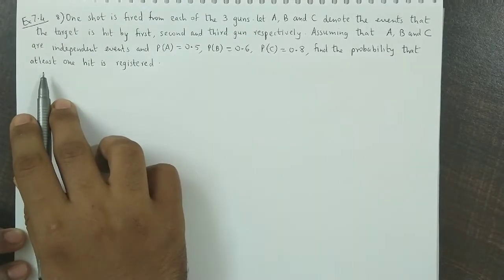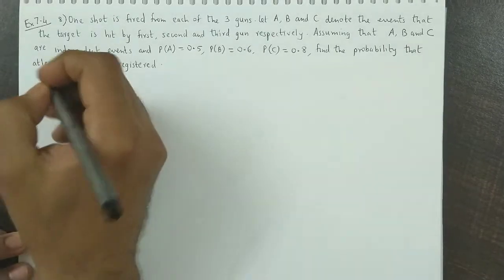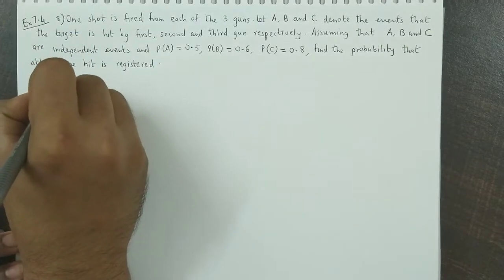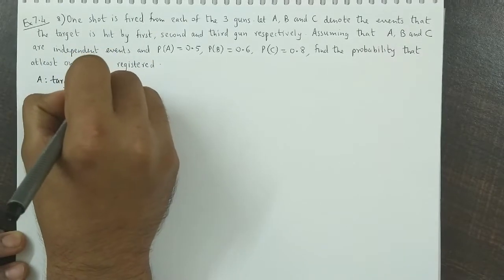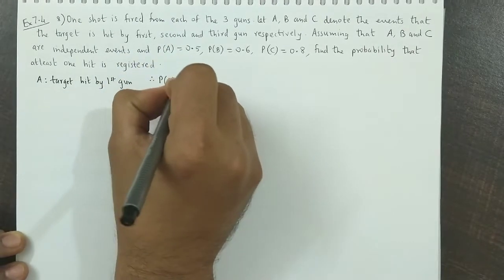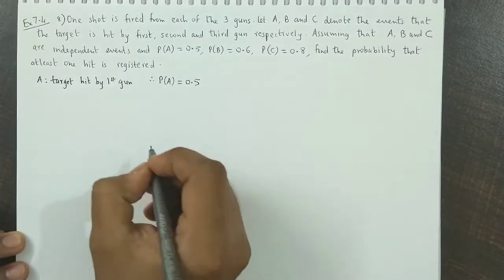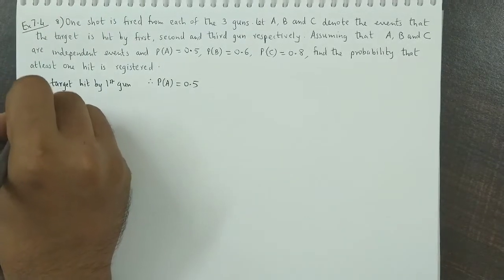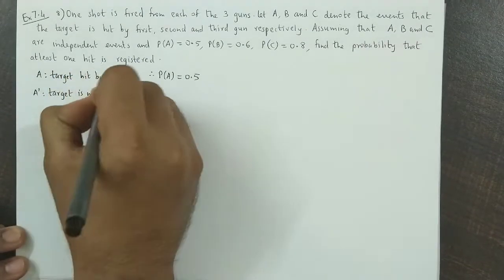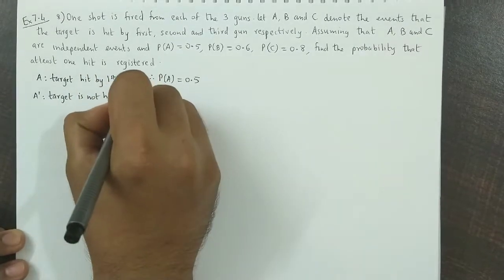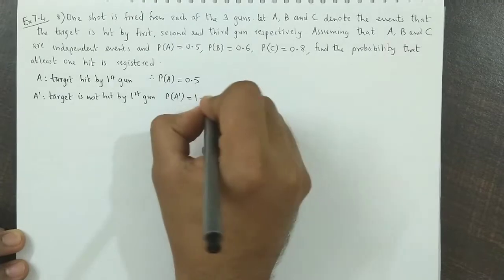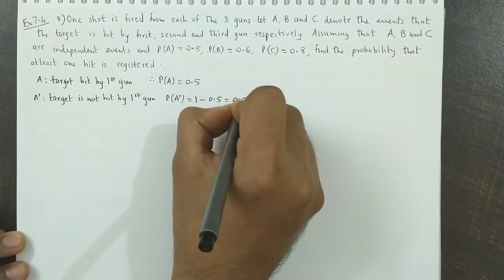Here event A is that the target is hit by the first gun. So the probability of A is 0.5. A complement means the target is not hit by the first gun. The probability of A complement will be 1 minus P(A), which equals 1 minus 0.5, so that will be 0.5.